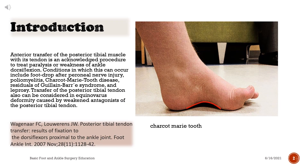Anterior transfer of the posterior tibial muscle with its tendon is an acknowledged procedure to treat paralysis or weakness of ankle dorsiflexion. Conditions in which this can occur include foot drop after peroneal nerve injury, poliomyelitis, Charcot-Marie-Tooth disease, residuals of Guillain-Barré syndrome, and leprosy. Transfer of the posterior tibial tendon can also be considered in equinovarus deformity caused by weakened antagonists of the posterior tibial tendon.